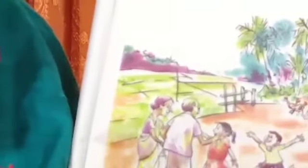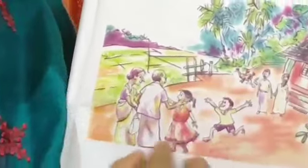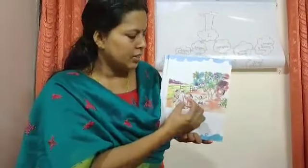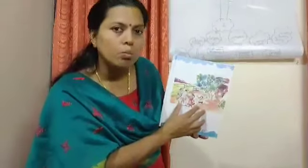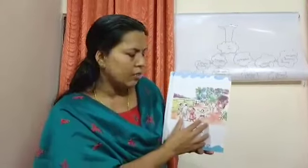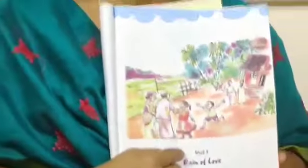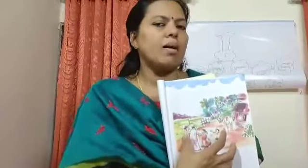They love their grandparents so they are running. All these members form a family and all the members love each other, care for each other — that makes a happy home. All members like father, mother, brother, sister, grandparents — they all form a family.